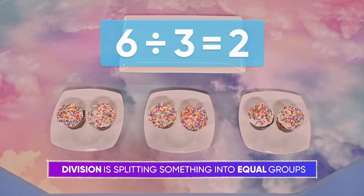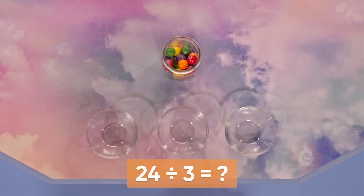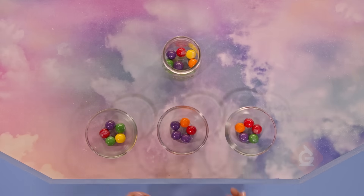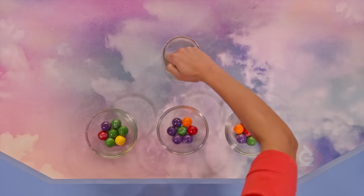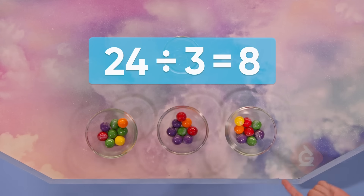We have one more treat — these 24 gumballs. How can you split this larger number into three equal groups? We can use the same process to do 24 divided by three. Let's split the gumballs one at a time. So this means 24 divided by three equals eight, because we each get eight gumballs.